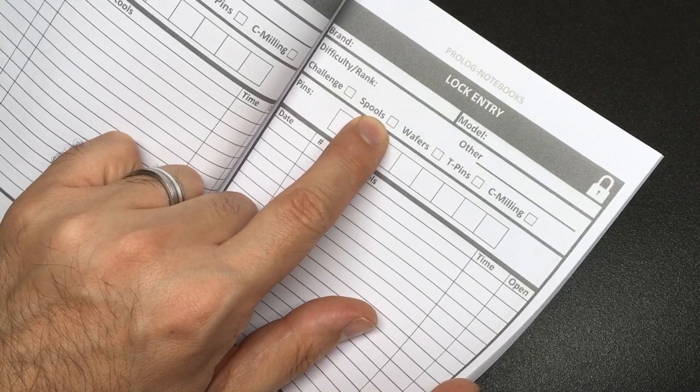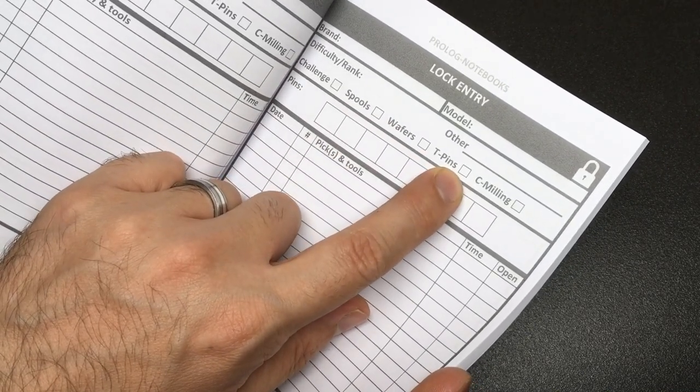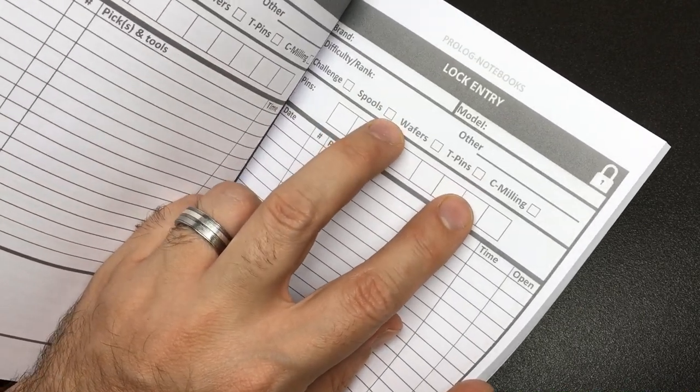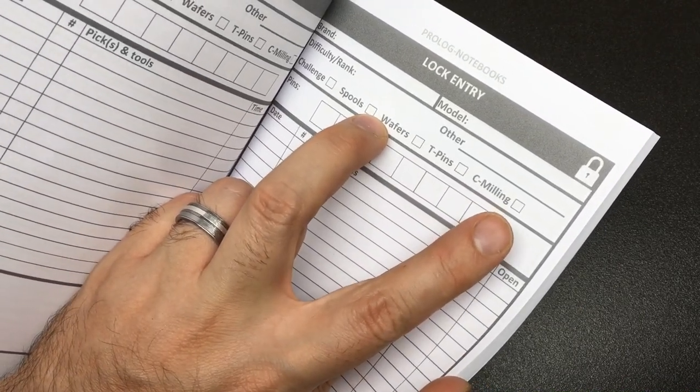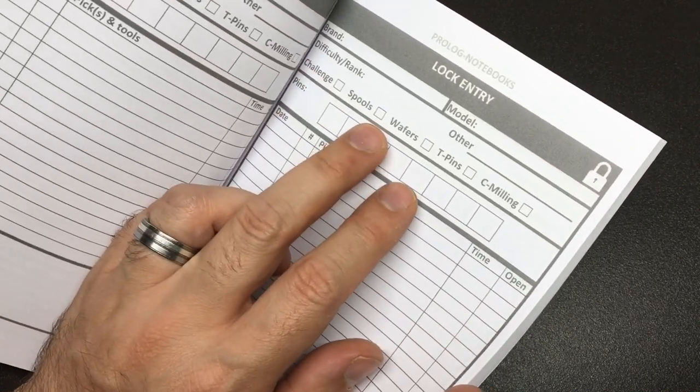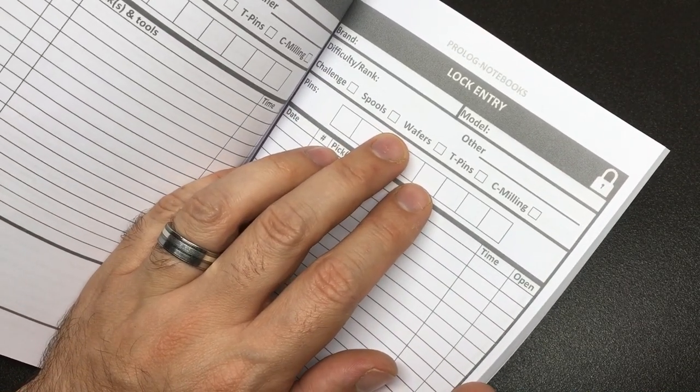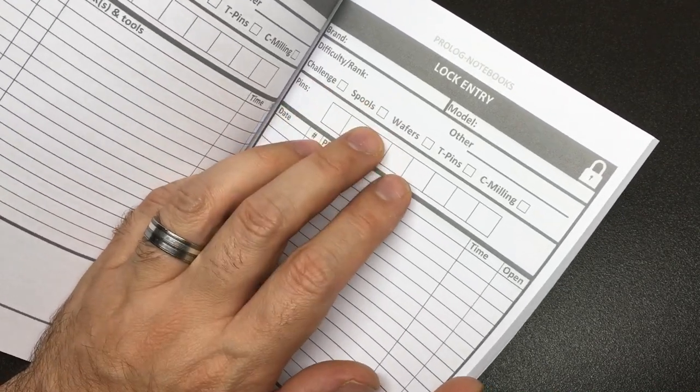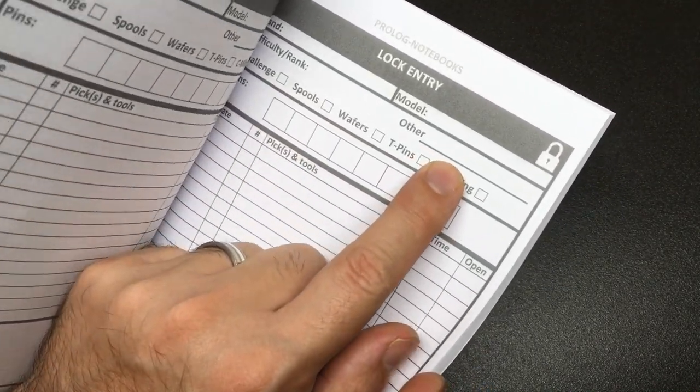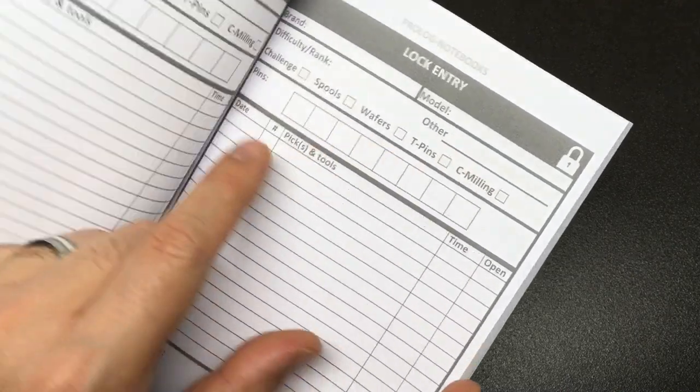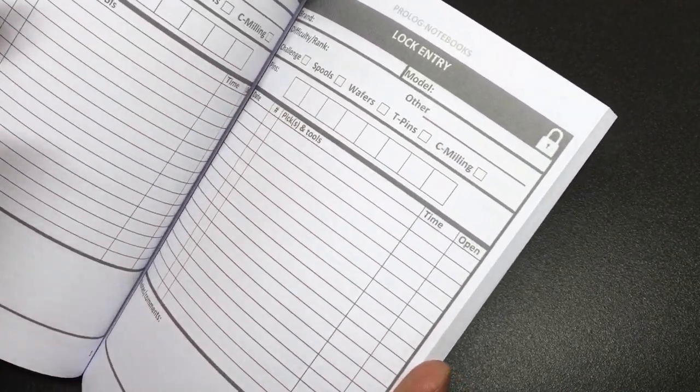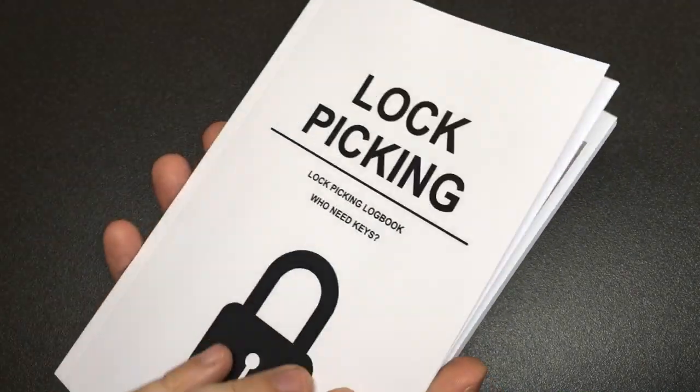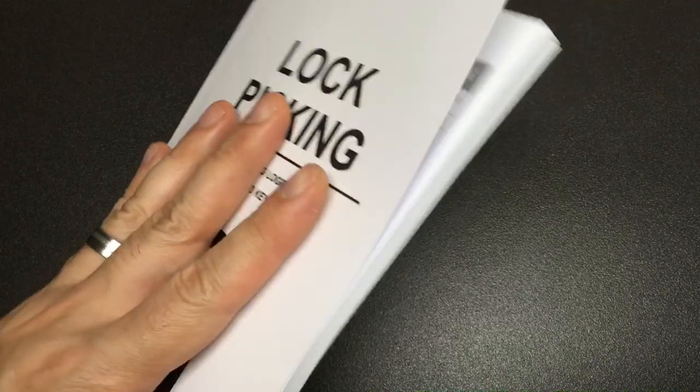So I was going to comment that it'd be nice to have serrated pins, multi spools, mushrooms instead. But on the other hand, you do have a field for other and you can draw them here. So it sort of has all your bases covered and it's a very minor, minor pick. So yeah, I think this is really, really nice.